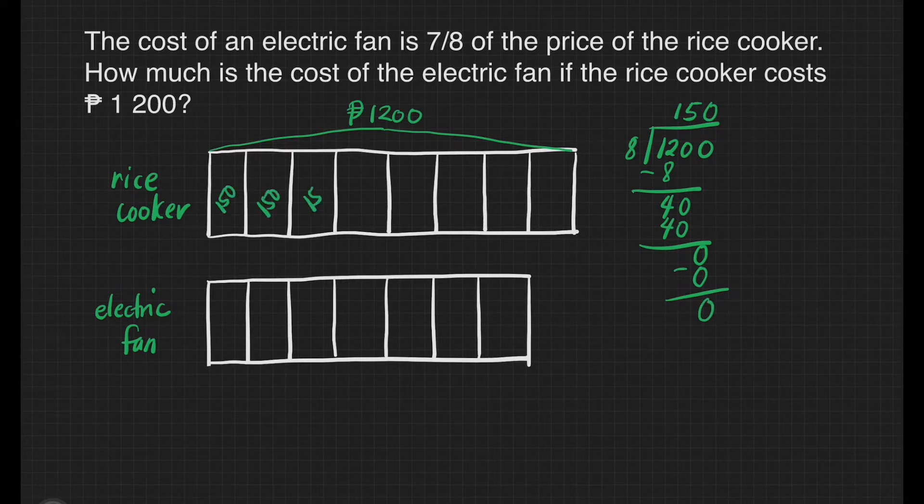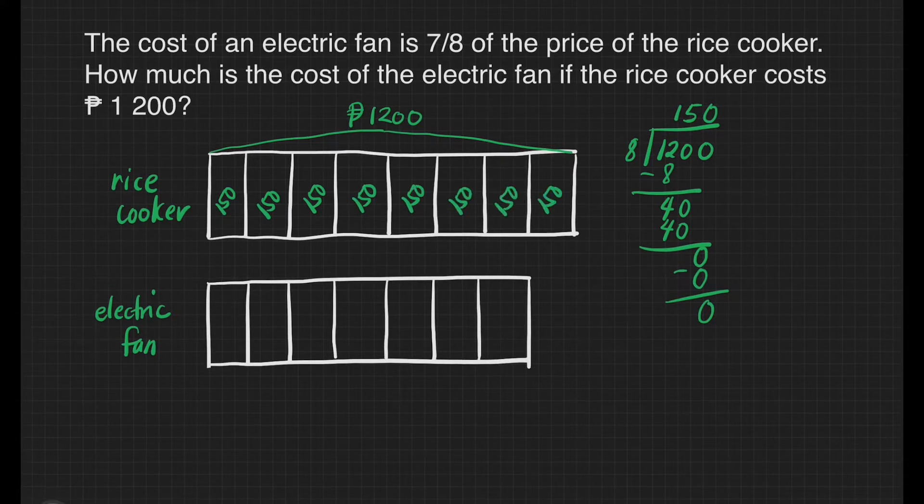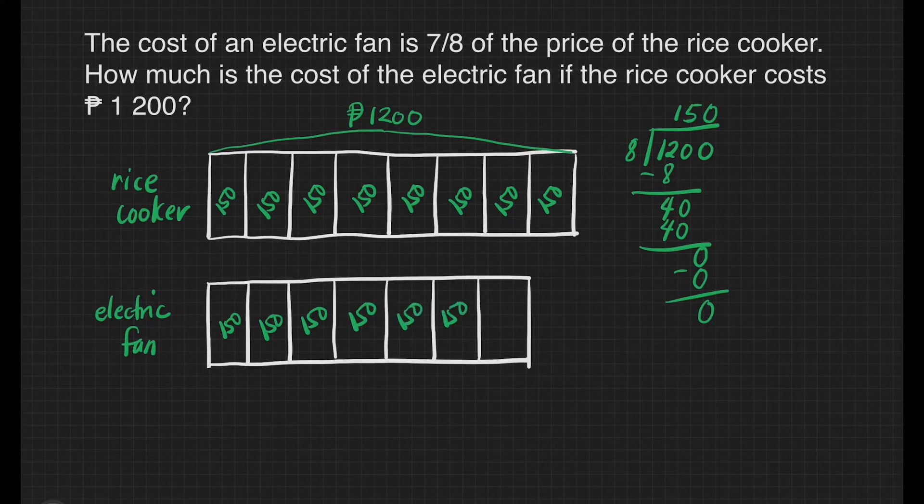That means we have 150 in each box. That also includes the boxes we have in our electric fan. Since we are looking for the price of our electric fan, all we need to do is multiply 150 to 7.